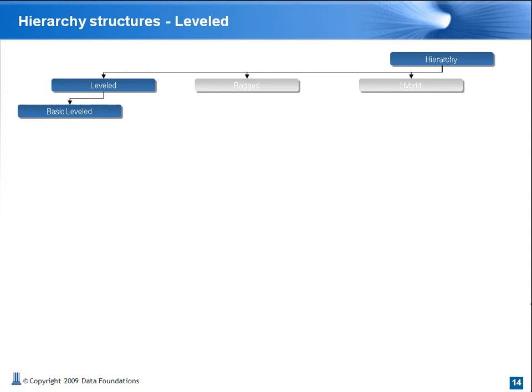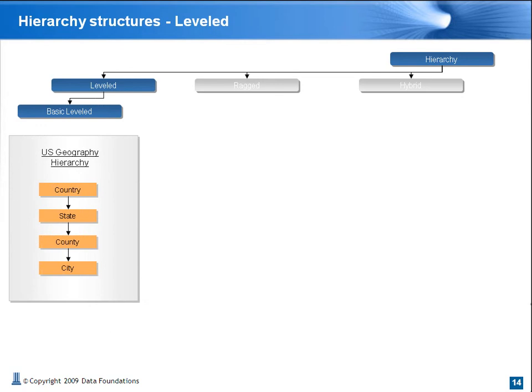Taking a simple example of a U.S. geography hierarchy structure, we have a neat four-level hierarchy. Each level has its own attributes. In this example, country has ISO code 2-3, IOC code, WMO code, and FIPS code.